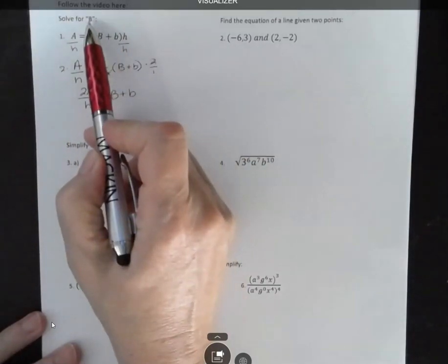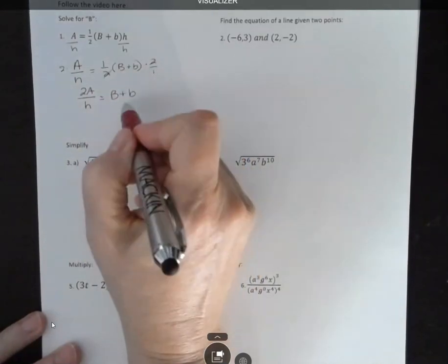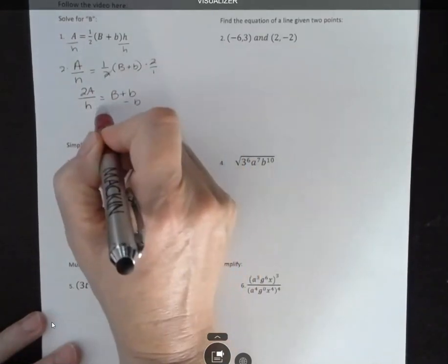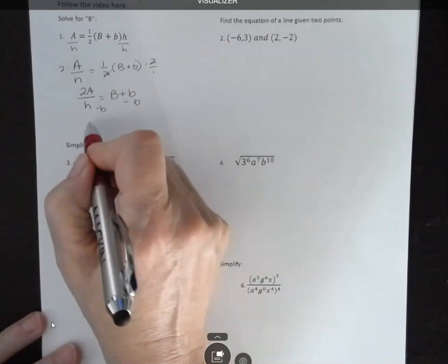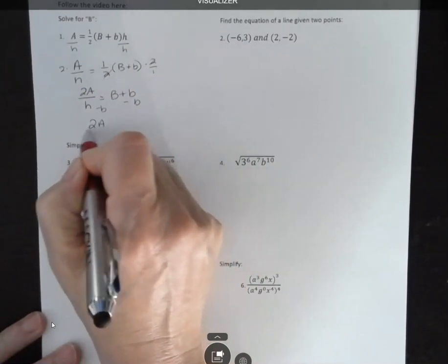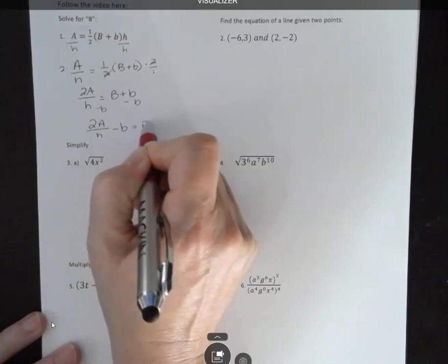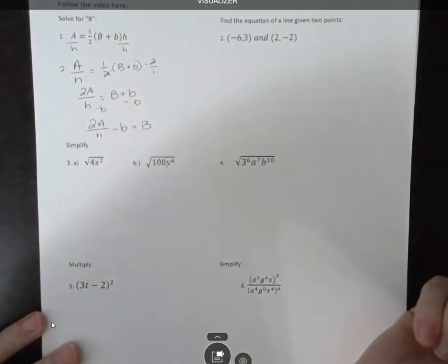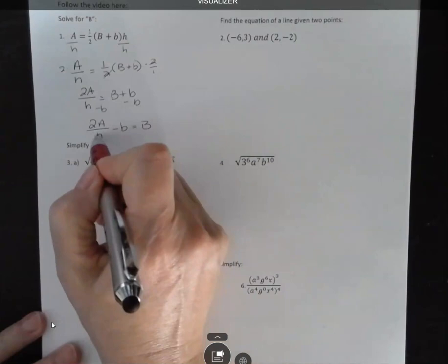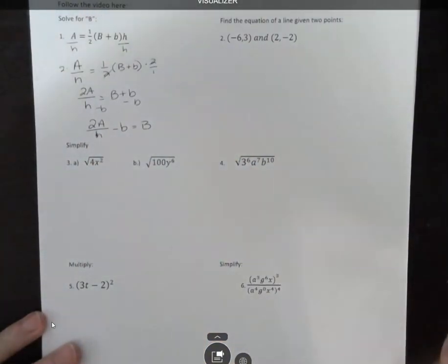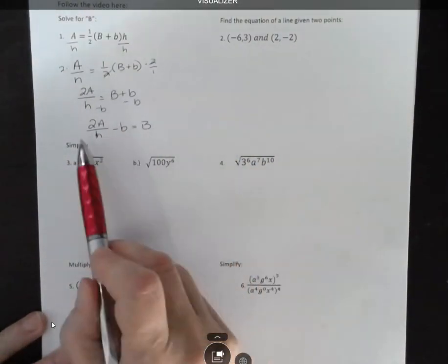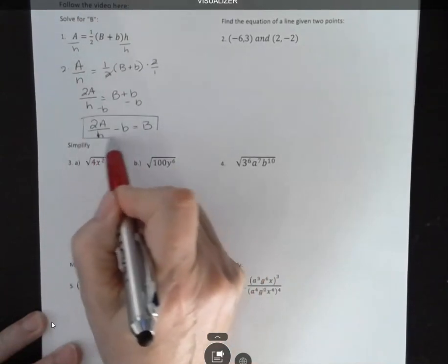I'm not solving for that lowercase b, so I want to get capital B by itself. I'm going to subtract b from both sides, and I have 2A over h minus b equals capital B. It doesn't matter which side of the equation your capital B goes on, as long as it's isolated and everything else is on the other side.